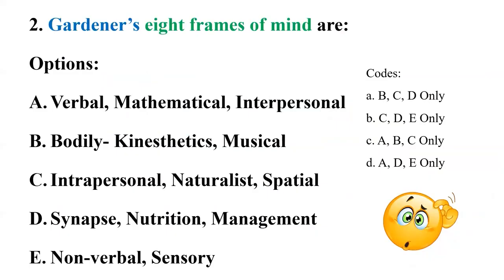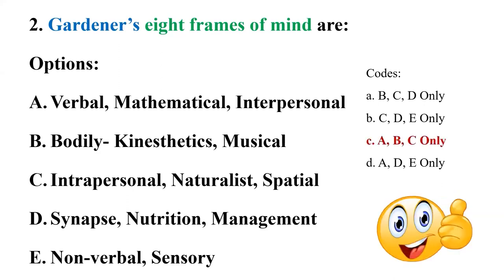Coming back to our question about Gardner's eight frames of mind — remember they may also ask about the ninth, which is naturalistic. By eliminating options D and E, we get the correct answer: code C — capital A, B, C only.